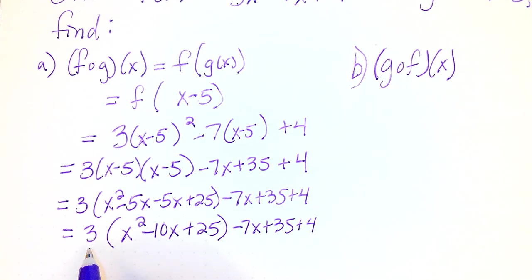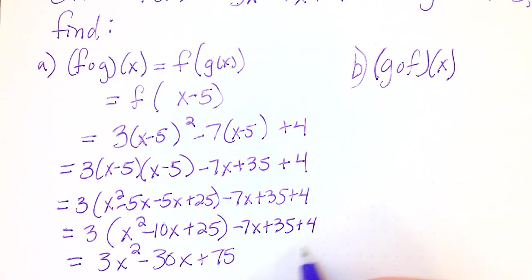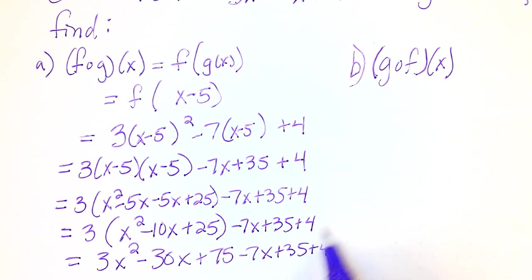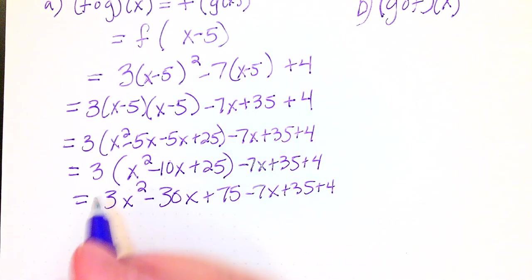Let's distribute the 3. This is going to be 3x squared minus 30x plus 75 minus 7x plus 35 plus 4. And you could have definitely added these two along the way if you wanted to. I saved it for last, no big deal either way.